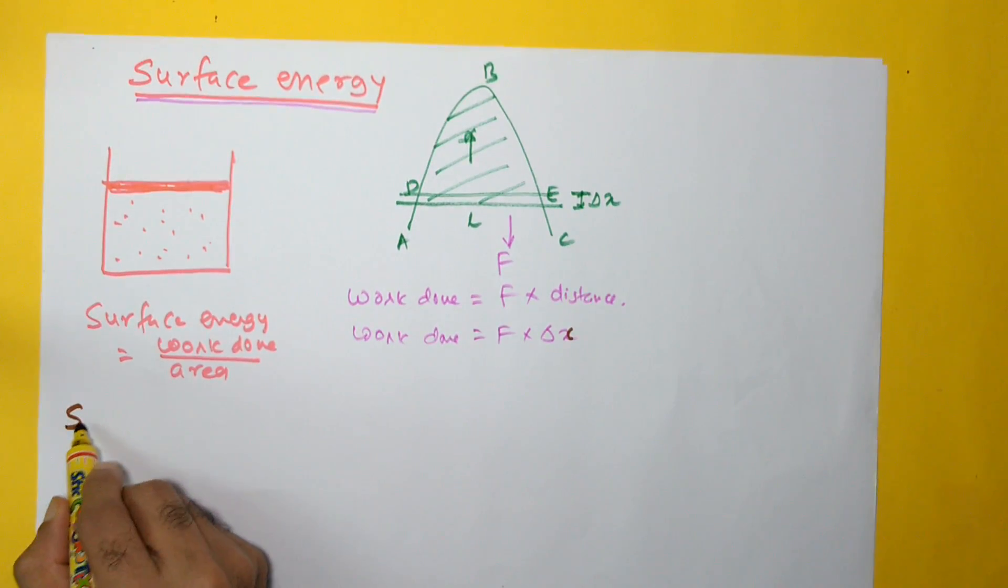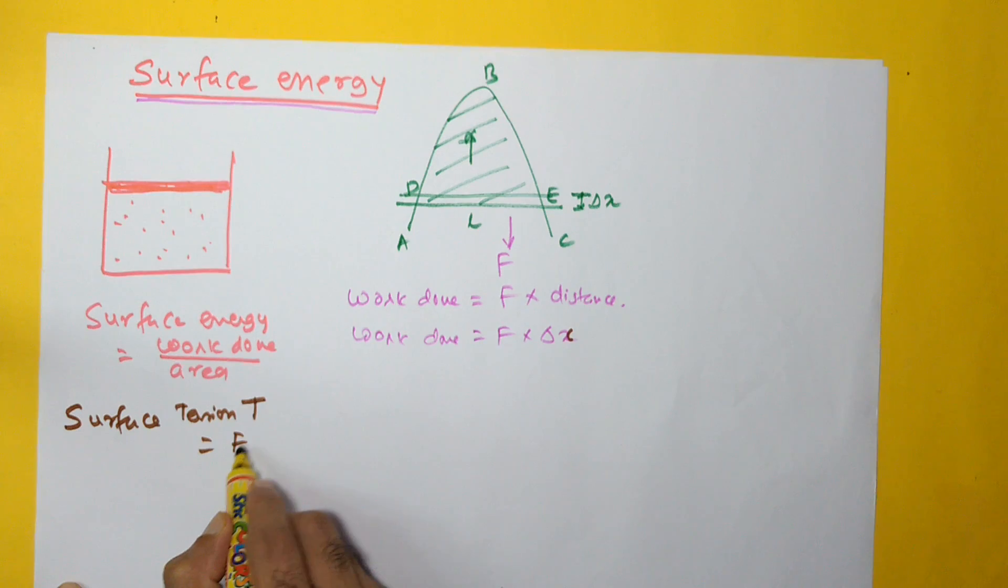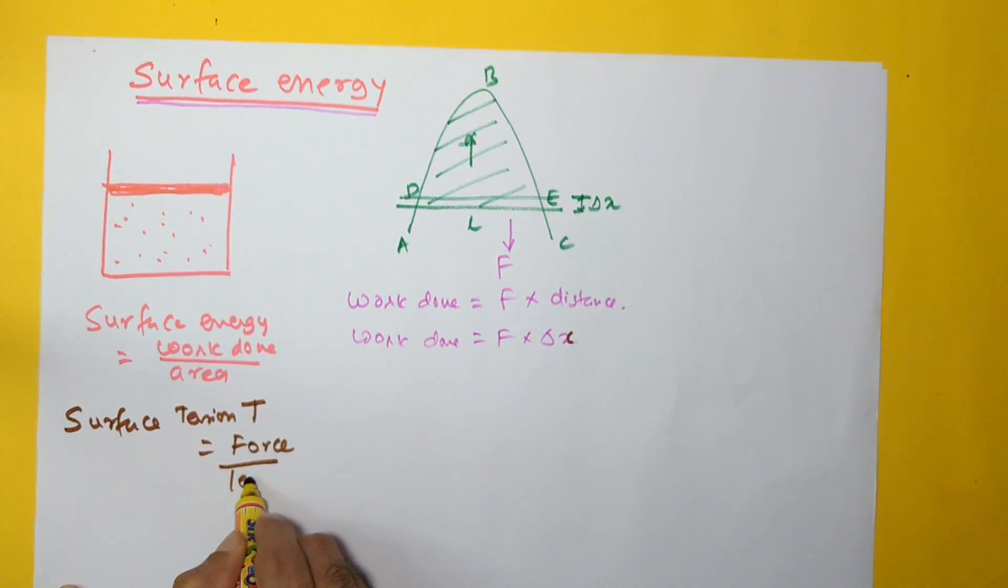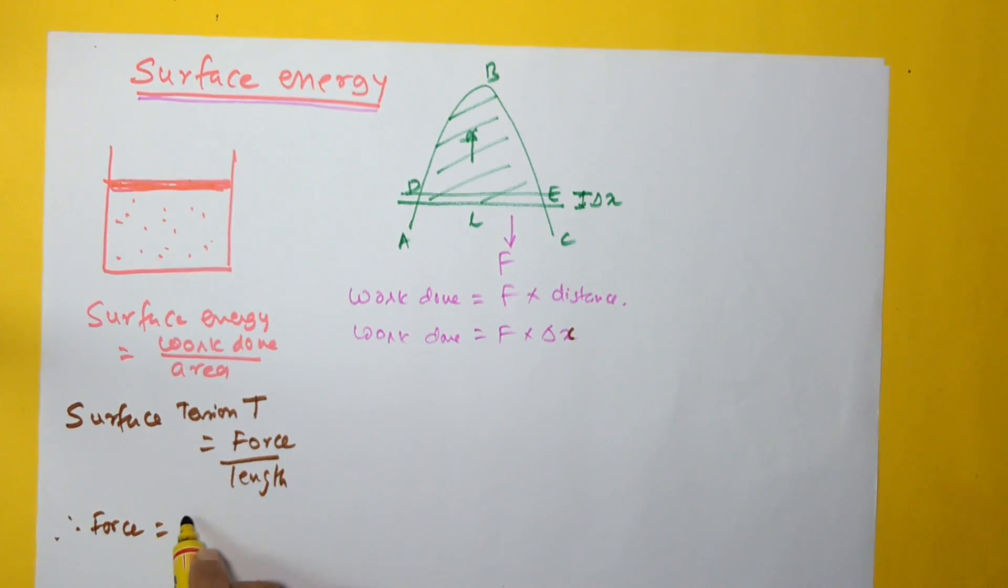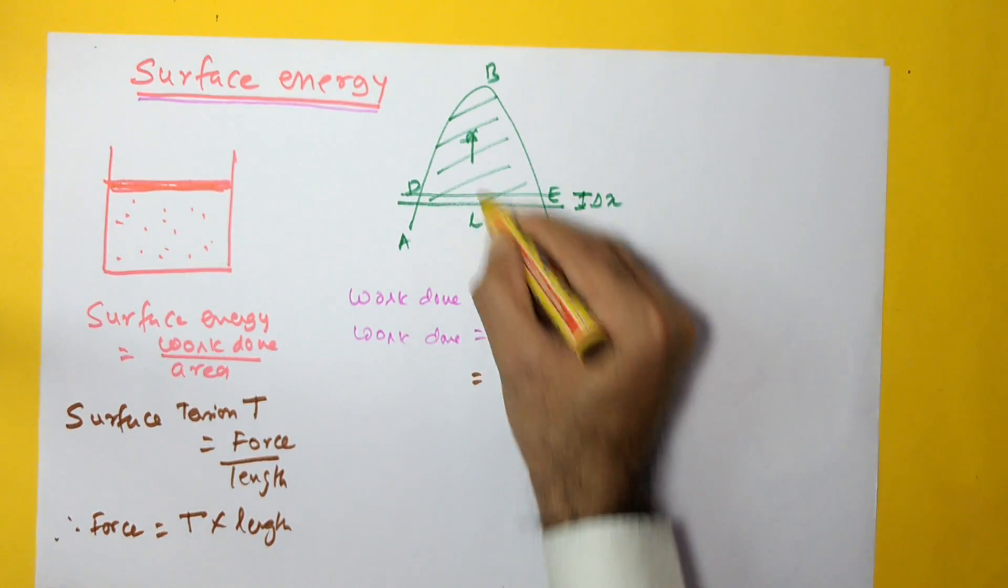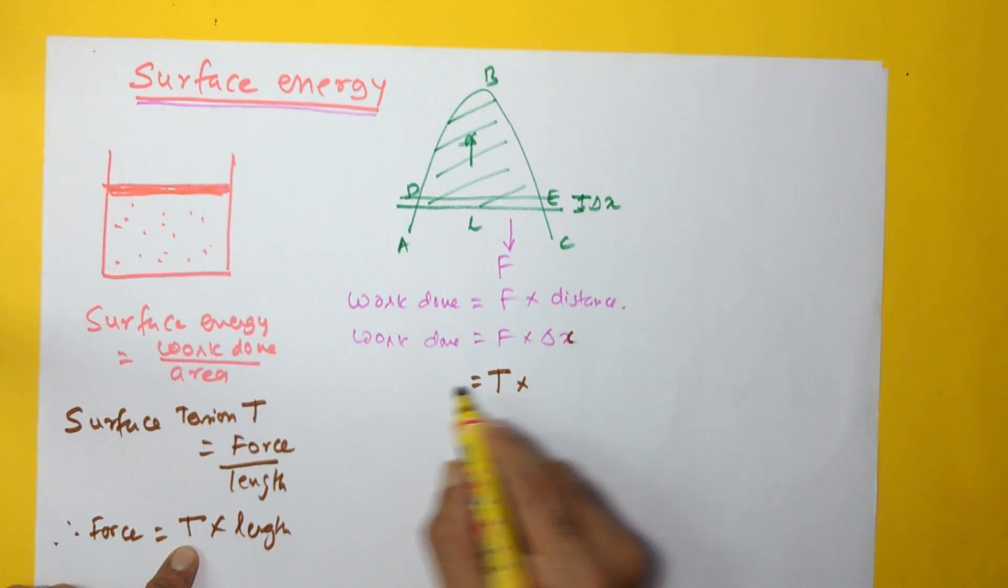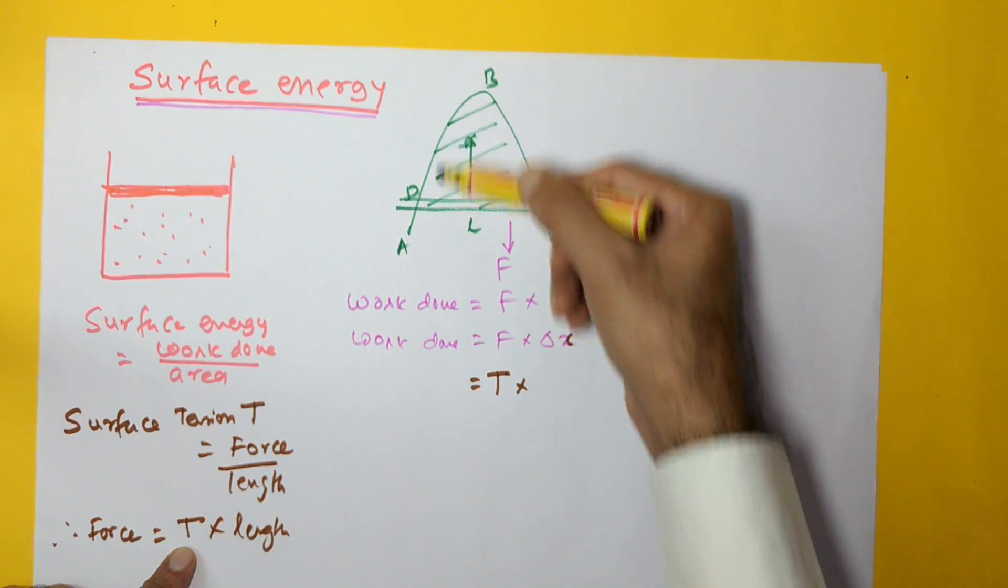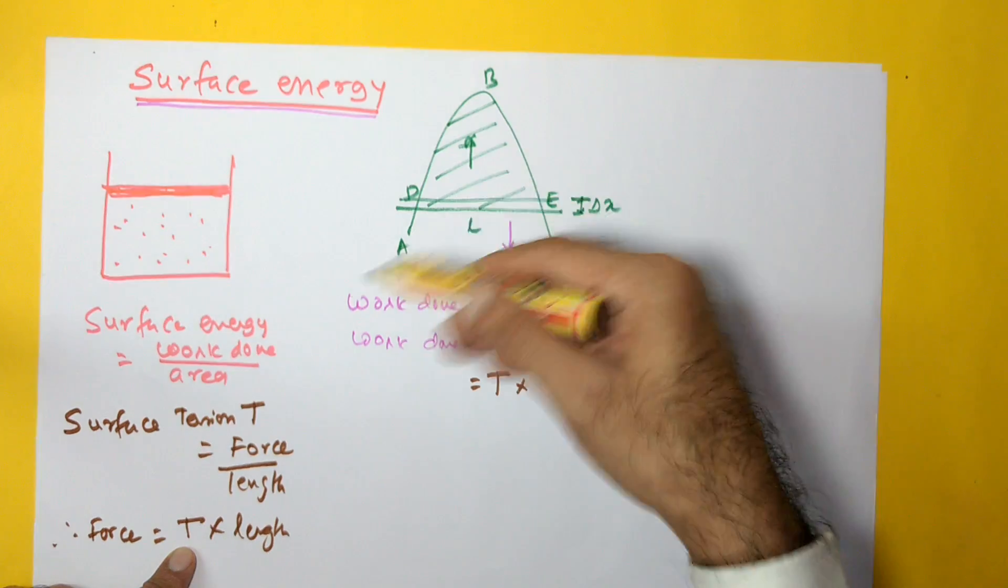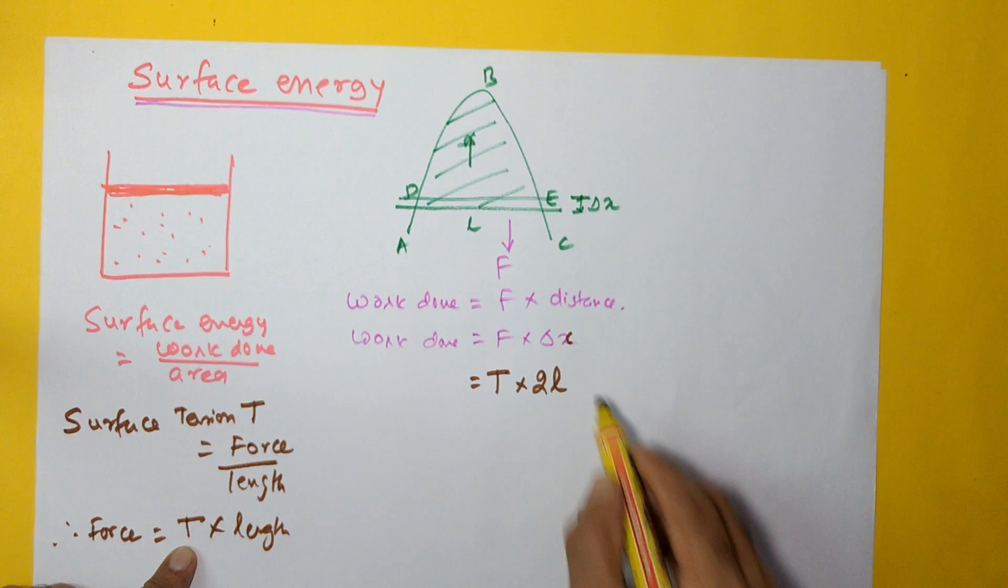We already know that surface tension denoted by T is given by force per length. Therefore, the force of surface tension is equal to T into length. For this force which is related to surface tension, I can write surface tension of this particular material into the length. Now, in this case the length is L as we said earlier, but the top part of this film is in contact with air. Similarly, the bottom part is also in contact with air. So we will take 2L into delta x.